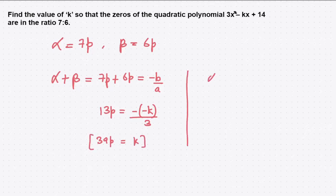And what is alpha times beta? Alpha times beta equals c/a, which equals 7p times 6p = 14/3.